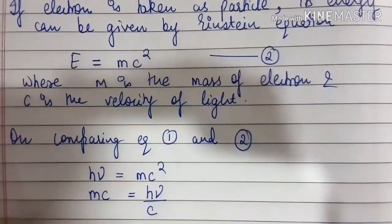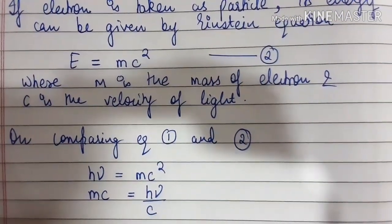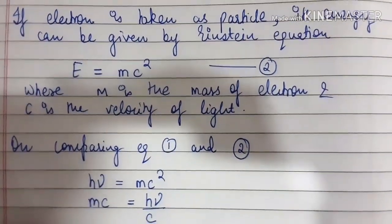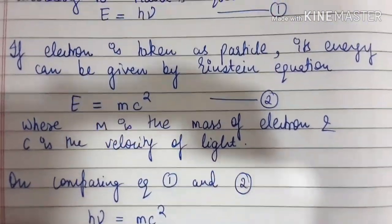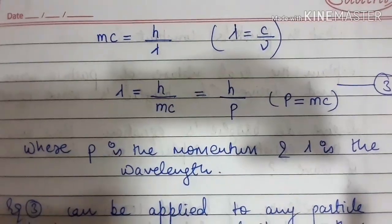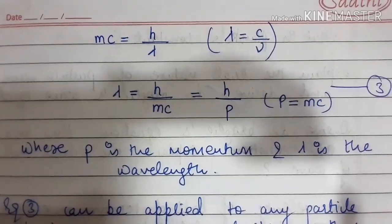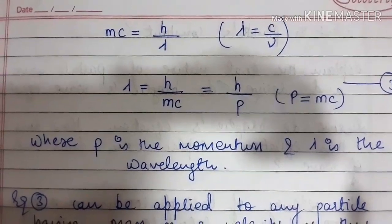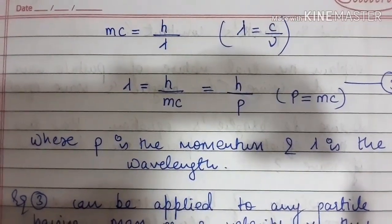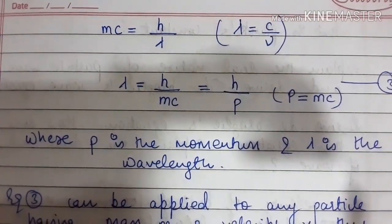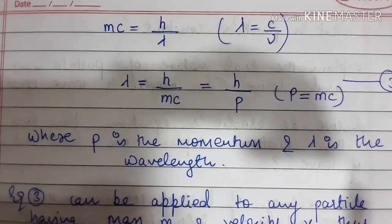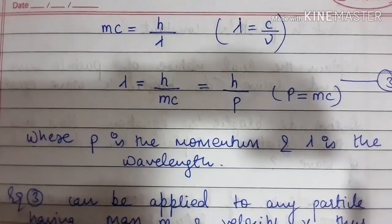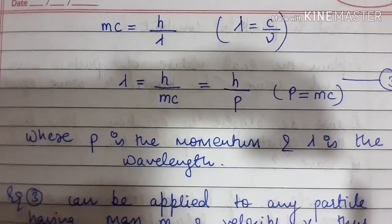what we get on comparing equation one and two is mc = hν/c. At last, what we get is λ = h/mc, and momentum is also equal to mass times the speed of light.